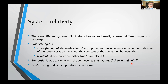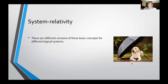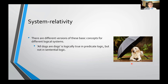Because of the different systems of logic, when you define these particular concepts and give them rigorous definitions, you define them relative to the particular system you're working with. The result is you end up with slightly different versions of these basic concepts in different logical systems. For example, take 'all dogs are dogs' — this is logically true in predicate logic, since it's not possible for it to be false. In sentential logic, it's actually not a logical truth, because sentential logic doesn't include the operator 'all,' so you can't represent the internal structure of the sentence.